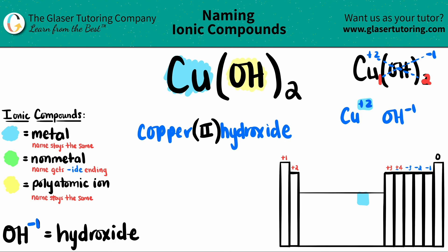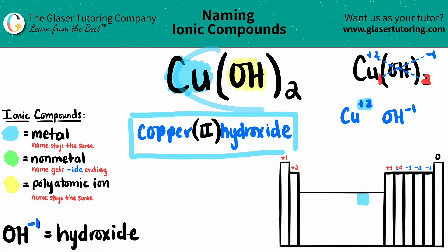Now we are all good to go. So this is your answer: the name for CuOH₂ is copper(II) hydroxide.